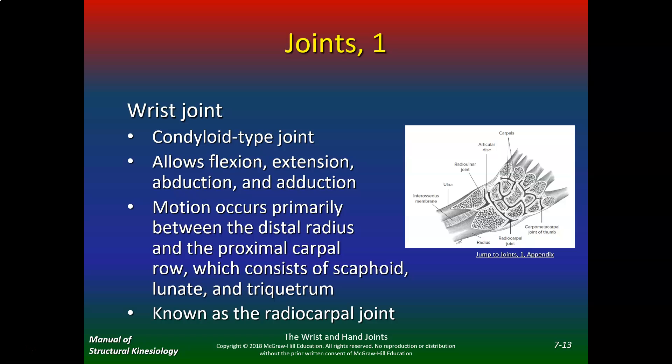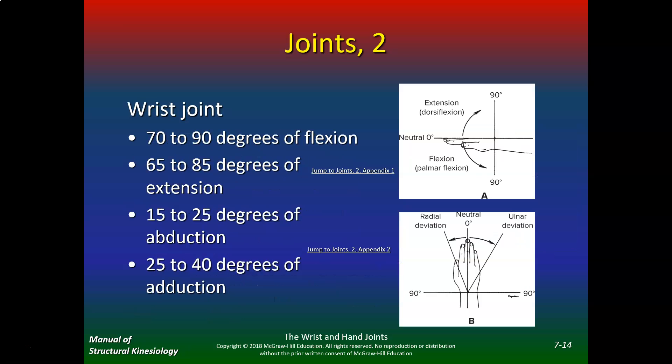Motion occurs primarily between the distal radius and the proximal carpal row — scaphoid, lunate, and triquetrum — known as the radiocarpal joint. The wrist does 70–90 degrees of flexion, 65–85 degrees of extension, 15–25 degrees of abduction, and 25–40 degrees of adduction.